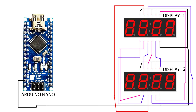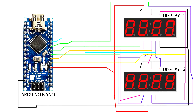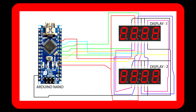Connect both segment display ground terminals to the Arduino ground pin. First segment display pin 11 connected to Arduino digital pin 2. First segment display pin 7 connected to Arduino digital pin 3. First segment display pin 4 connected to Arduino digital pin 4. First segment display pin 2 connected to Arduino digital pin 5. First segment display pin 1 connected to Arduino digital pin 6. First segment display pin 10 connected to Arduino digital pin 7. First segment display pin 5 connected to Arduino digital pin 8. First segment display pin 3 connected to Arduino digital pin 9. The circuit setup is now completed.